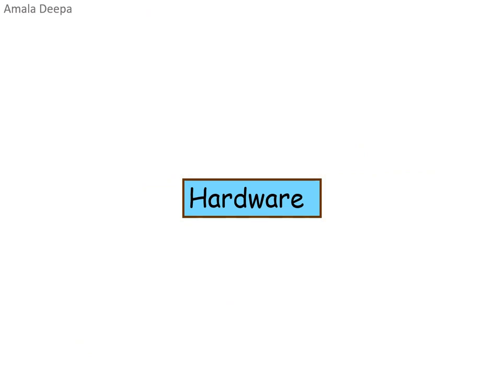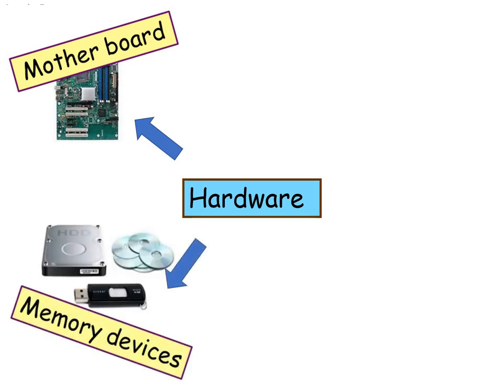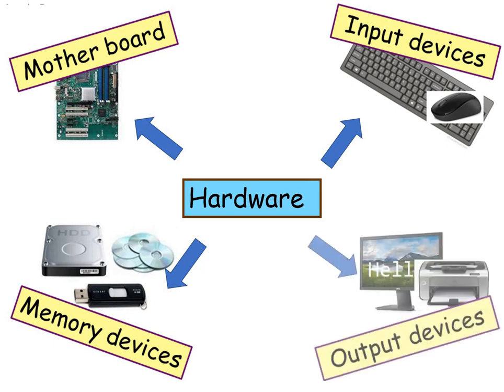Here are some examples of hardware. The motherboard houses the CPU, or central processing unit. Memory devices such as hard disk, CD-ROMs, and pen drive. Input devices: keyboard and mouse. Output devices: monitor and printer.